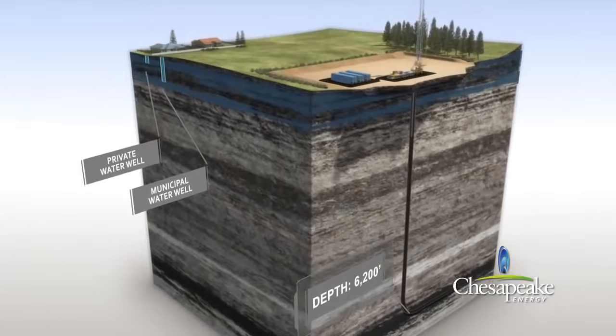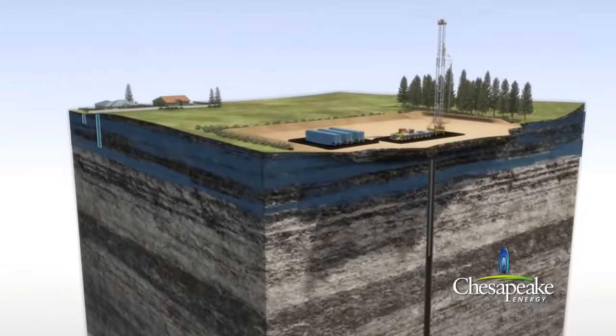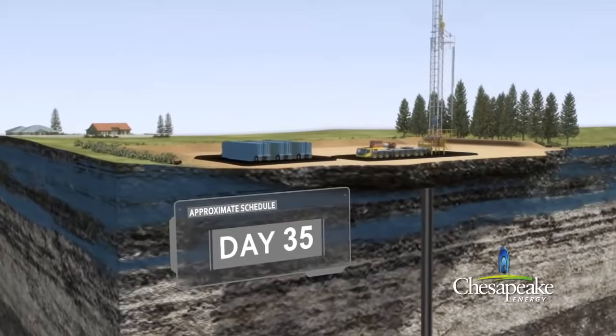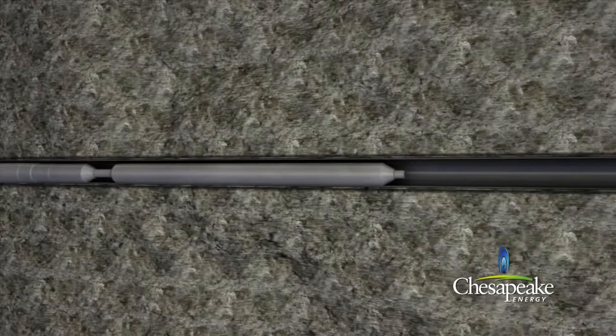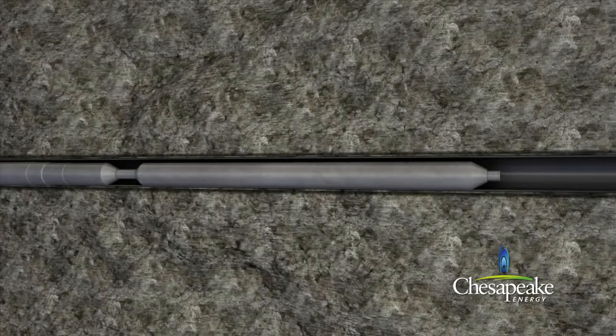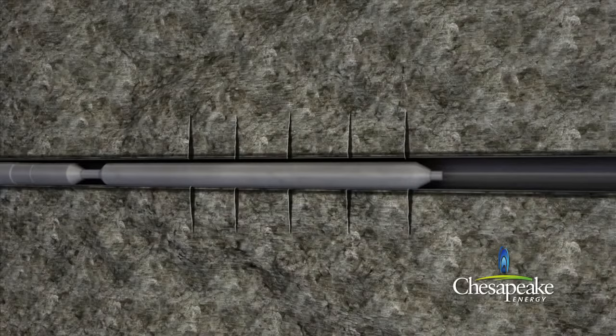In order to maximize the production potential of the well, the shale formation will be hydraulically fractured. In preparation for the fracturing process, the casing will be perforated in the horizontal portion of the well using tubing conveyed perforating guns containing explosive charges. The perforated intervals are spaced approximately 50 to 80 feet apart and create a connection between the production casing and the shale formation.